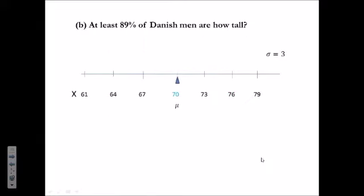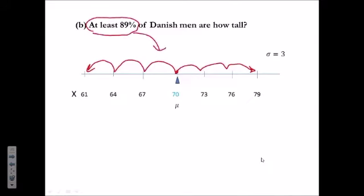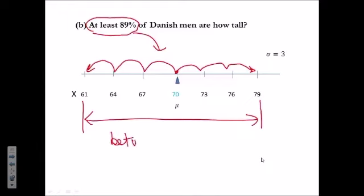At least 89% of Danish men are how tall? Chebyshev says at least 89% of a distribution is within three standard deviations of the mean in either direction. So at least 89% are within this interval. That means their heights are between 61 and 79 inches.